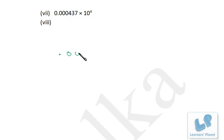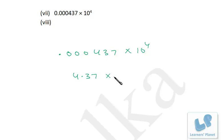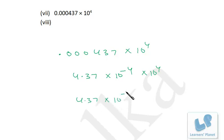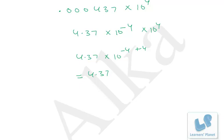Similarly in this problem it is 0.000437 times 10 raised to power 4. I shift the decimal 1, 2, 3, 4 places to the right. So it's 4.37 times 10 raised to power minus 4, times 10 raised to power 4. Combining these: 10 raised to power minus 4 plus 4, that is 10 raised to power 0, which equals 1. So the answer is precisely 4.37. I'm sure that's very easy — just do 3 or 4 problems and you'll get expertise in this. So that's all about powers and exponents. I hope you enjoyed this session. Do practice well with the worksheets. Bye-bye.